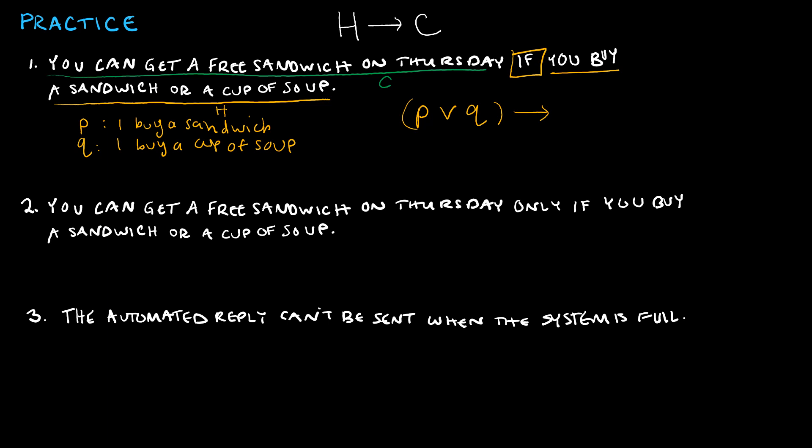The part I have written in yellow can now be represented using P and Q as I buy a sandwich or I buy a cup of soup, and that's going to imply my conclusion. I'm going to call that R: I get a free sandwich on Thursday. That is my solution.